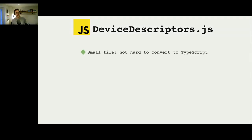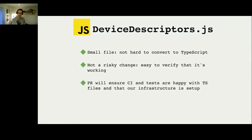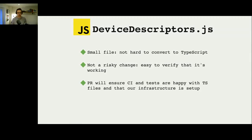Why did we pick this file? Firstly, it's small — it's not going to be hard to change it to TypeScript. It's not a risky change. We're not touching core Puppeteer functionality or complicated code. It's pretty easy to verify that it's working. Just the act of moving this file to TypeScript and creating the pull request is going to test our continuous integration. It's going to confirm that this process — take a file, create a pull request, upload it, wait for it to go green, and merge it — is the right process for us.